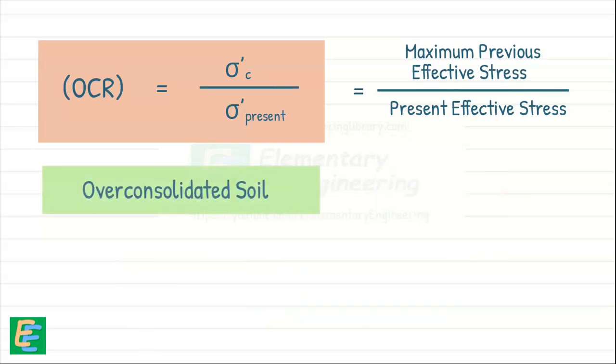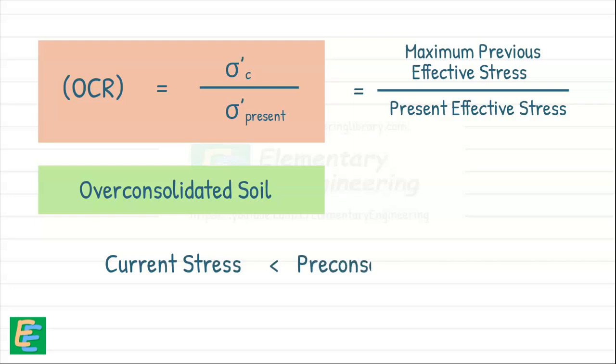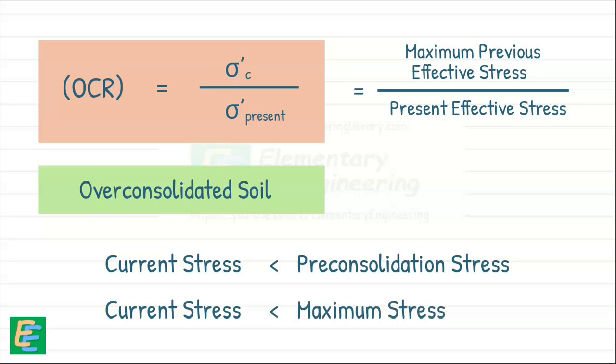While for overconsolidated soils, current stress will be less than the pre-consolidation stress. This means current stress is less than the maximum stress soil has ever faced. Then for overconsolidated soils, OCR is greater than 1.